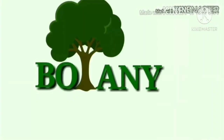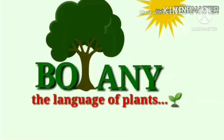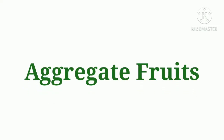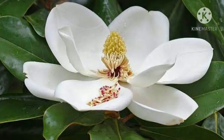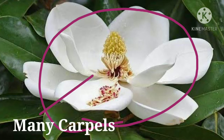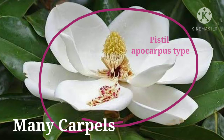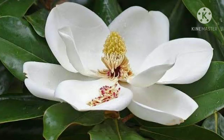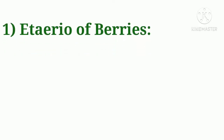Welcome to the language of plants. Today's topic is aggregate fruits. Aggregate fruits are derived from a single flower that contains many carpels — that means an apocarpous pistil. The ovary of the receptive carpels mature into fruitlets and they cluster together on the peduncle or stalk of the flower.